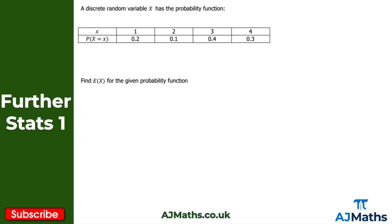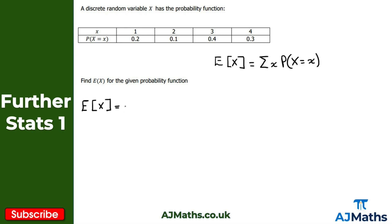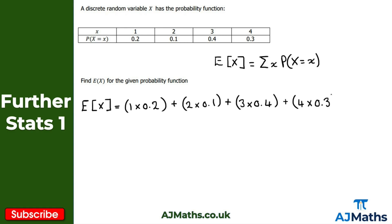Here's a practice question for you — pause the video now and have a go at it. Hopefully you got on OK. We're finding the expected value of our random variable x again, using the formula: the summation of x times its respective probability. So I'll take each value of x and multiply it by its probability: 1 times 0.2, plus 2 times 0.1, plus 3 times 0.4, plus 4 times 0.3.